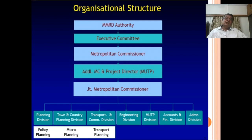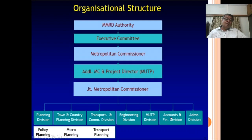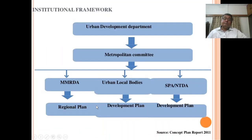The organizational structure of MMRDA: An Executive Committee governs the authority. Under the Metropolitan Commissioner there is an Additional Metropolitan Commissioner and Project Director. Then comes the Joint Metropolitan Commissioner, under whom are the Planning Division, Town and Country Planning Division, Transport and Communication Division, Engineering Division, MUTP Division, Accounts and Financial Division, and Administration Division covering policy planning, micro planning, and transport planning. The institutional framework includes the Urban Development Department, Metropolitan Committee, MMRDA, Urban Local Bodies, SPA, and NTDA, leading to Regional Plans and Development Plans.